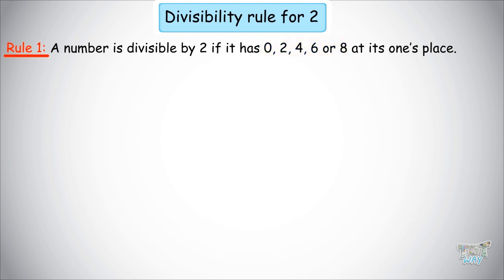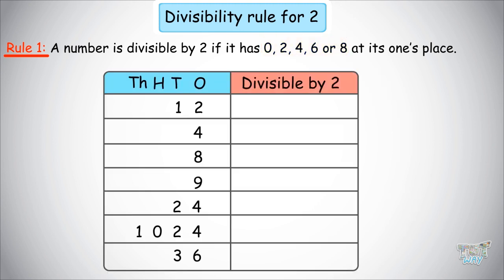Now we have a list of numbers. We will be marking the numbers which are divisible by 2 according to the rule we just learned. 12 — yes, because it ends with a 2. 4 — yes, it is divisible by 2. 8 — yes, this is also divisible by 2.